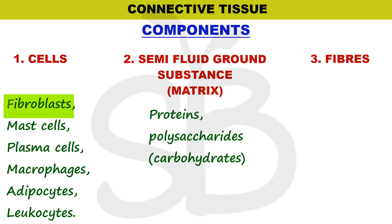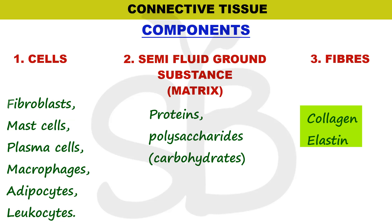Fibroblast cells produce structural protein fibers — for example, collagen and elastin. Collagen and elastin fibers are present in all connective tissues.